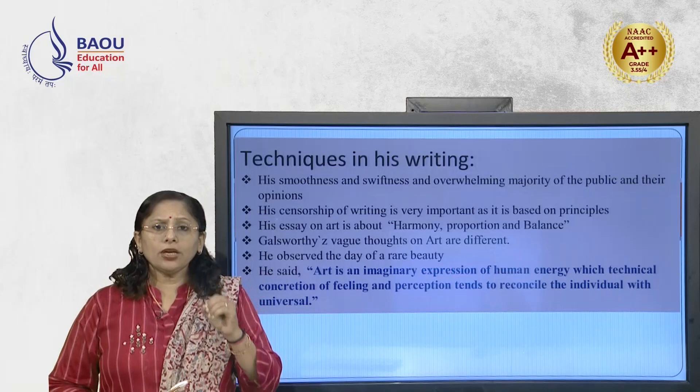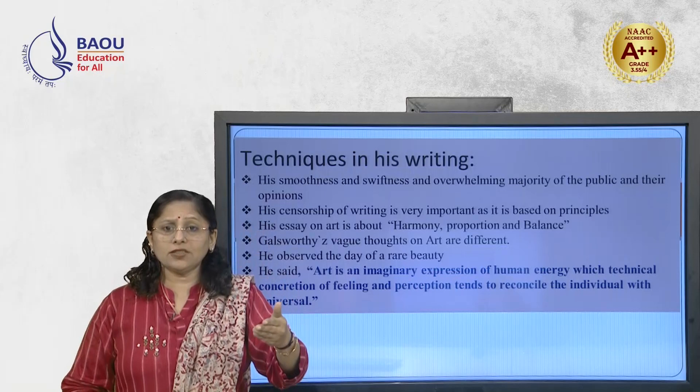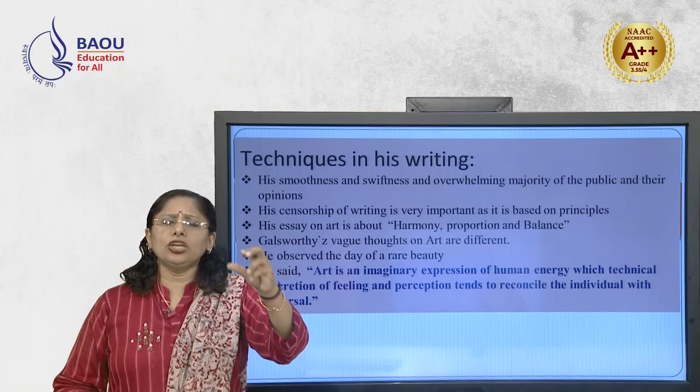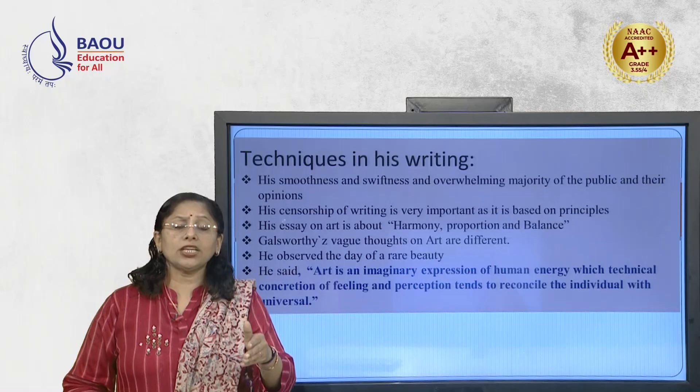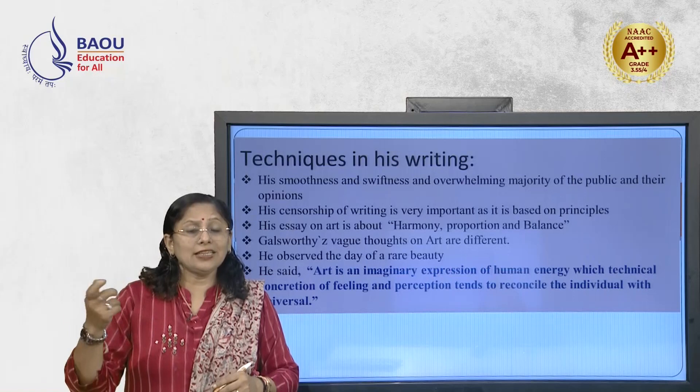There are certain techniques in his writing that you must know, because when writing an answer regarding John Galsworthy's essay on art and censorship, you are first supposed to write the biographical details of Galsworthy, then his famous works — The Forsyte Saga, the drama The Silver Box, or the short story Quality — and then you need to write about his style of writing, his techniques, and the features and characteristics of his writing style.